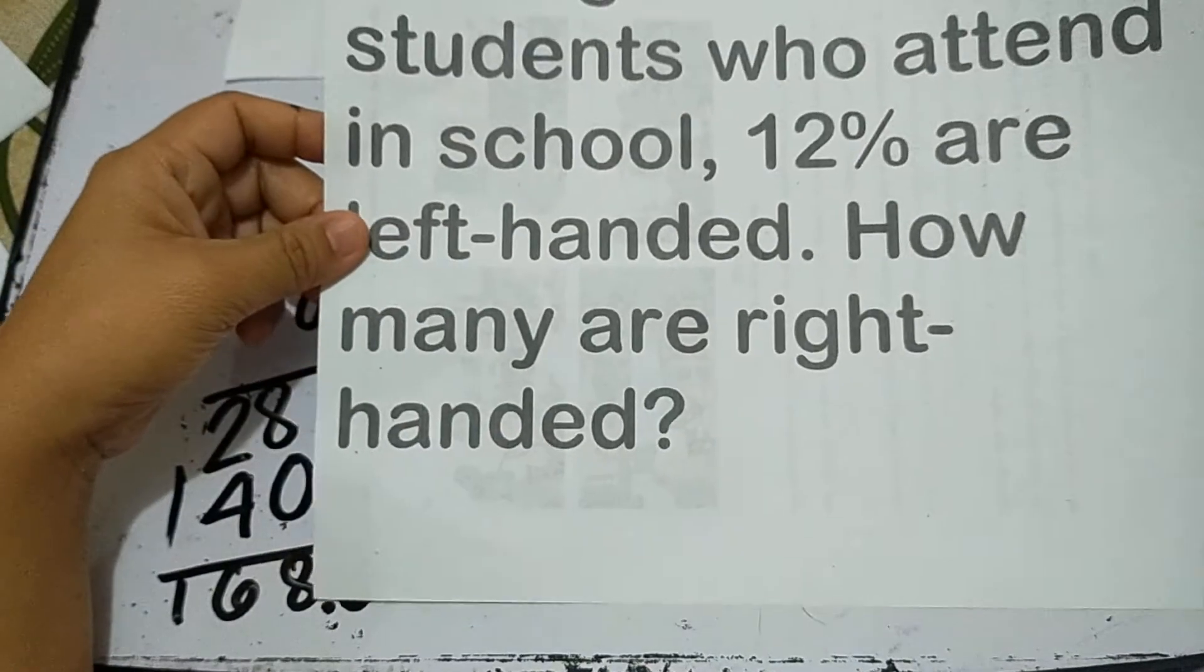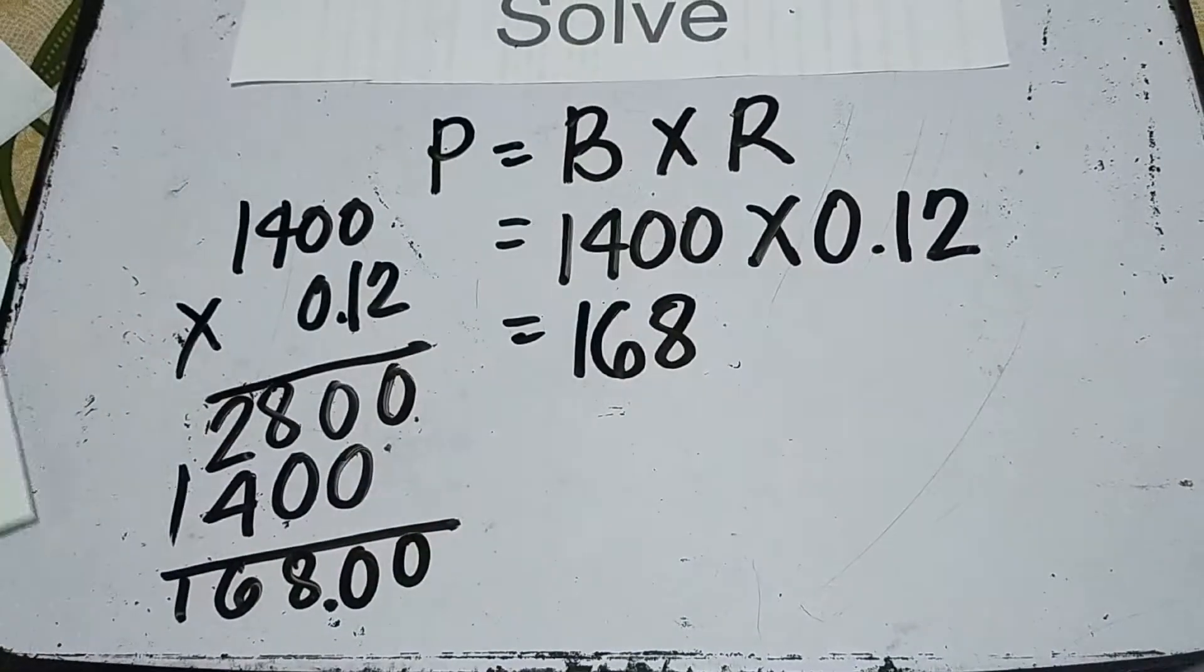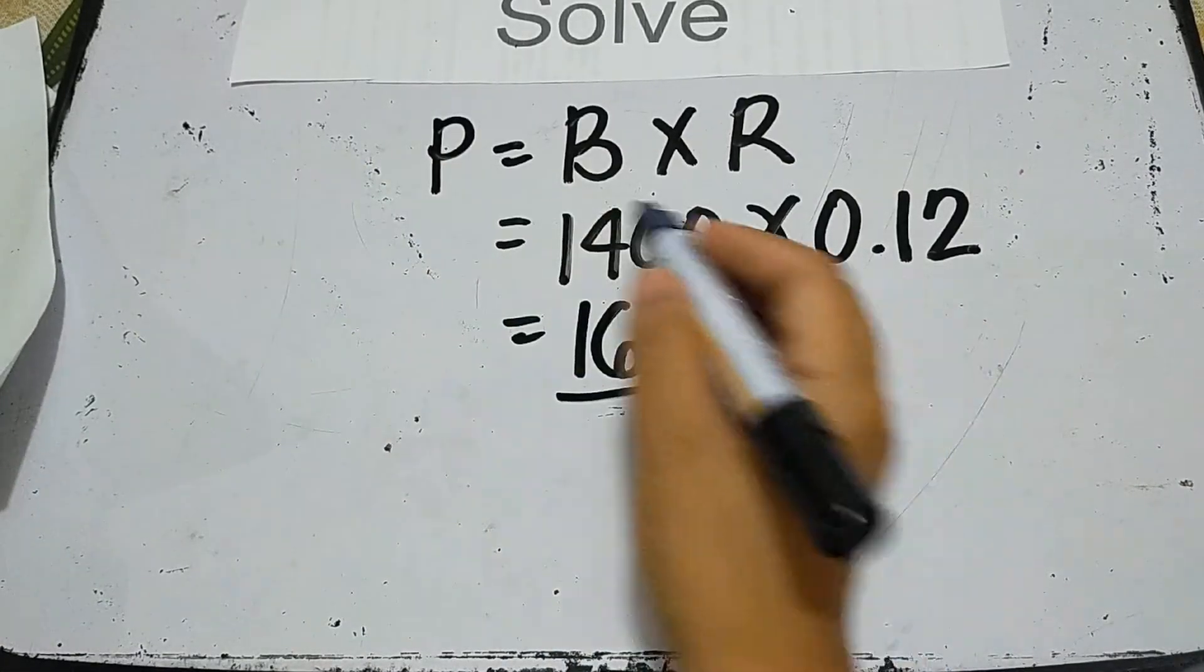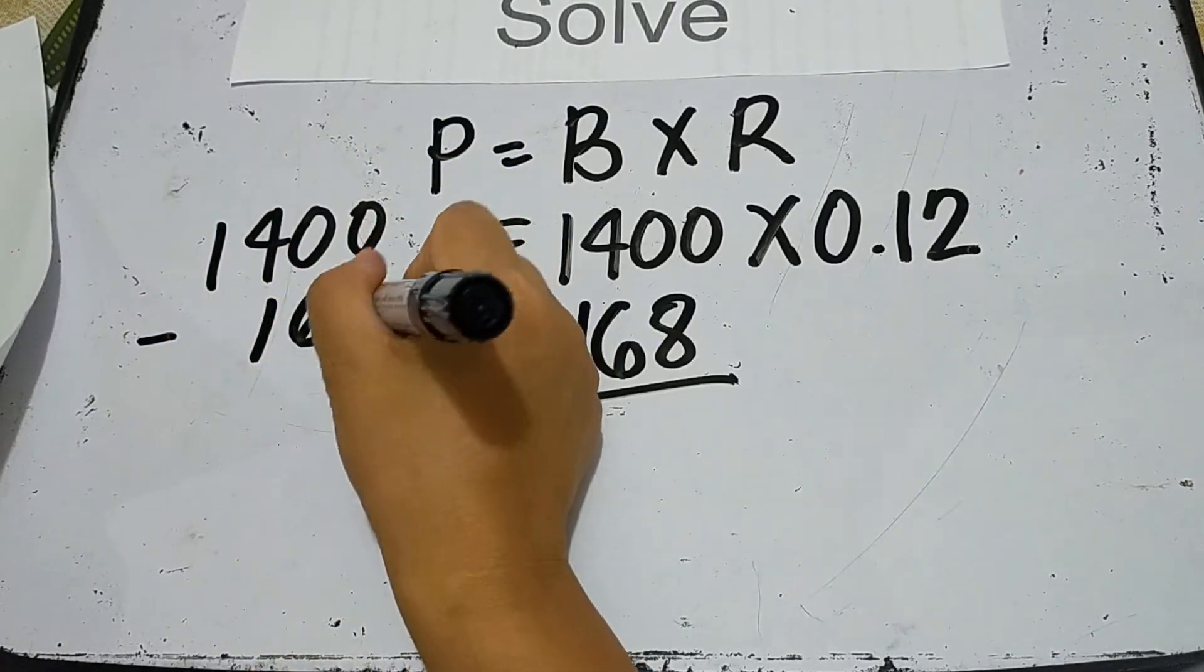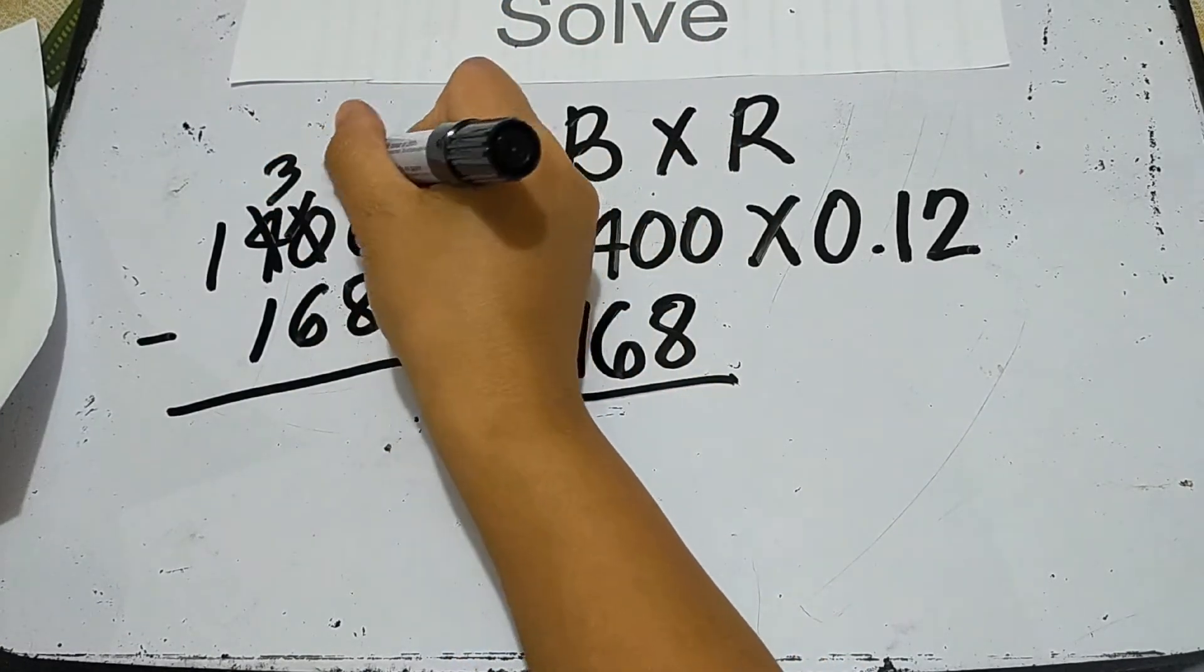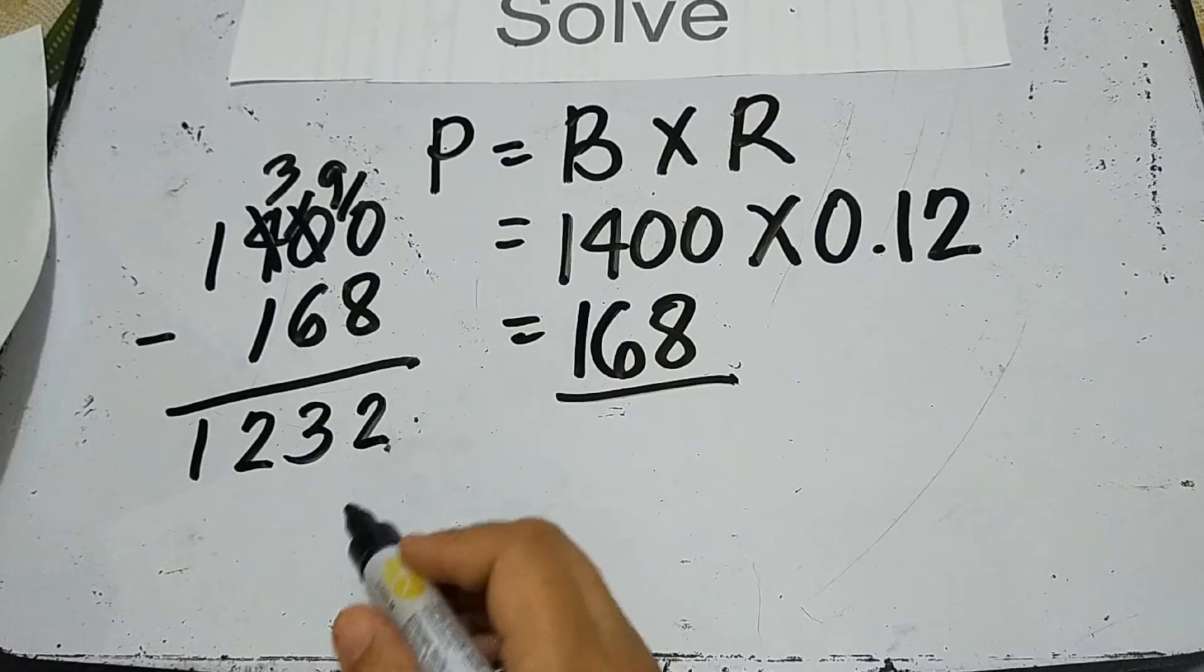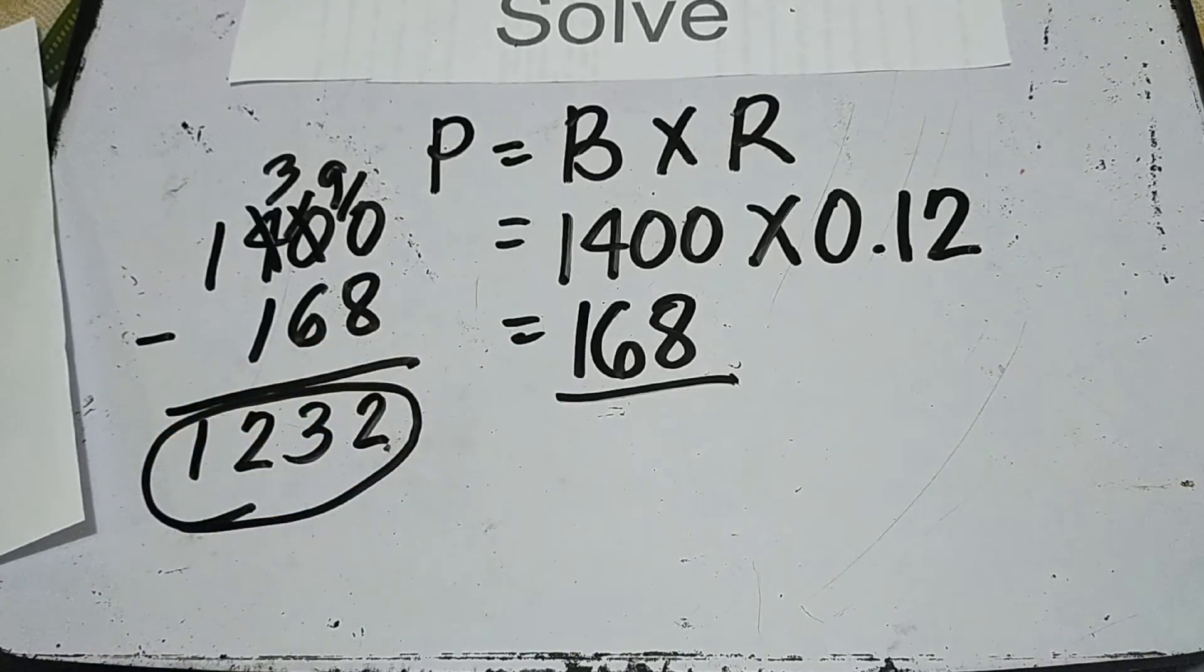Therefore, 168 is left-handed. The question asks for right-handed. To find the answer, we're going to subtract 168 from 1,400. 1,400 minus 168. Borrow: 4 becomes 3, 0 becomes 10, 10 becomes 9, 0 becomes 10. 10 minus 8 is 2, 9 minus 6 is 3, 3 minus 1 is 2, bring down 1. The number of right-handed are 1,232 students.